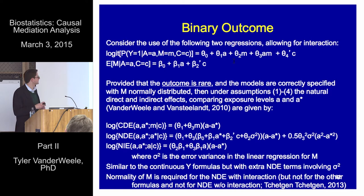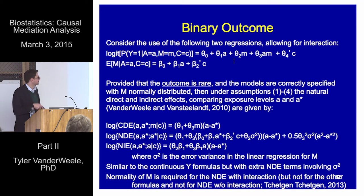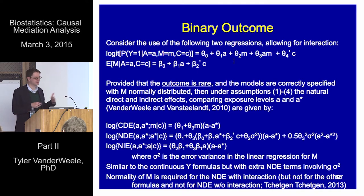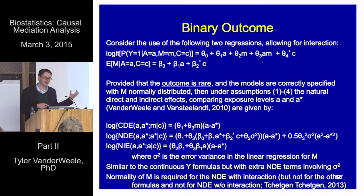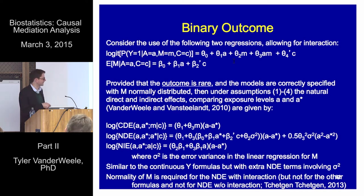When we move to odds ratios and logistic regression, the expressions become a bit more involved, but the principles are the same. It's just the output from the two regressions that gives us our direct and indirect effects. The normality assumption for M — that we didn't need with continuous outcomes — is only needed for the natural direct effect when there is exposure-mediator interaction. We don't need it for the controlled direct effect, the natural indirect effect with or without interaction, or the natural direct effect without interaction. But we do need that normality assumption for the natural direct effect with exposure-mediator interaction, to get simple closed-form expressions when we do the integrals.